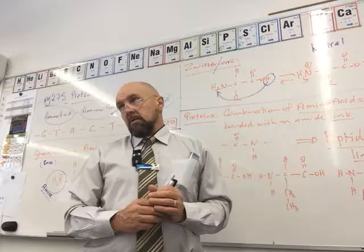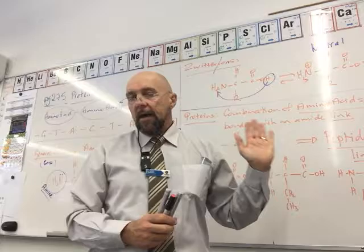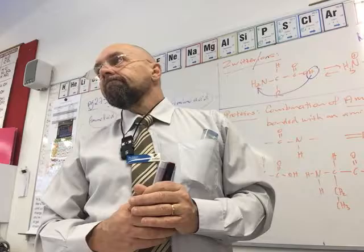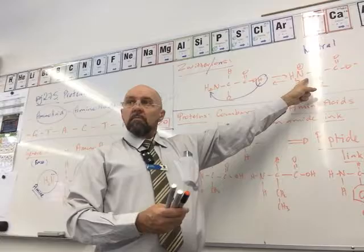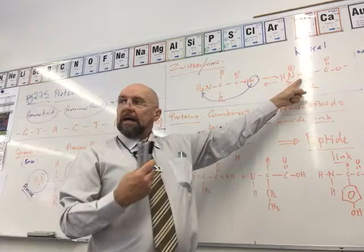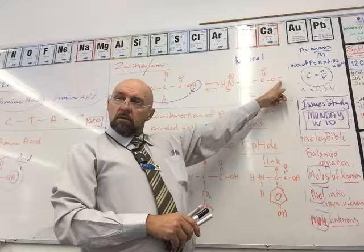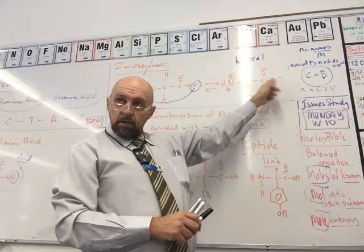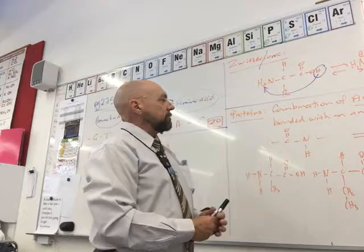If the pH is less than 7 — an acidic environment — the amino acid will exist in a protonated form: NH₃⁺ on one end and COOH on the other. That would be the favoured ion in acidic conditions. If the pH is greater than 7 — alkaline — the structure favours the deprotonated form.